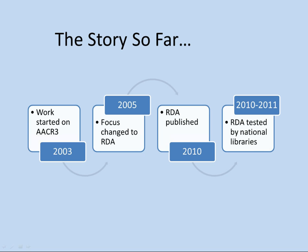Here's the timeline for RDA so far. In 2003, work started on what was then called AACR3 — they thought they were just going to revise the rules. A couple years in, they realized a big change was needed, so they started calling it Resource Description and Access and renamed the Joint Steering Committee accordingly. RDA was finally published in 2010 after a number of delays. I was in library school from 2005 to 2008 and they kept saying it was coming, but it was not. Finally, in June 2010, RDA was published and the test period started.